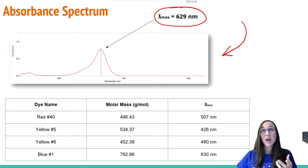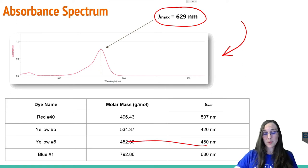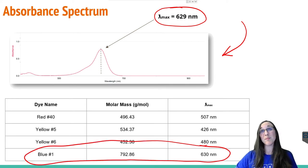...would tell us then that this sample is likely the blue number one food dye sample because it's the closest lambda max to what we saw in the lab.